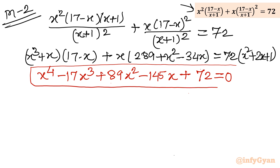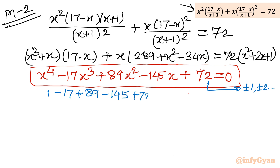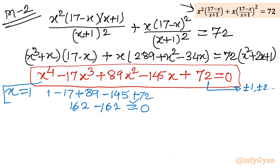Before applying synthetic division, I will use the rational root theorem. The eligible factors of the constant term 72 include plus or minus 1, 2, 3, and so on. First, simply adding all the coefficients: 1 minus 17 plus 89 minus 145 plus 72. Positive numbers sum to 162 and negative numbers also sum to negative 162, giving zero. So x equals 1 is our first base solution.